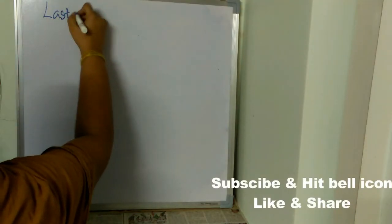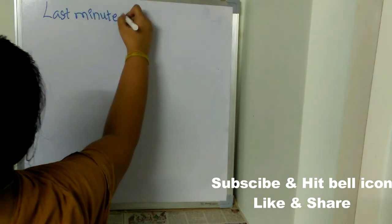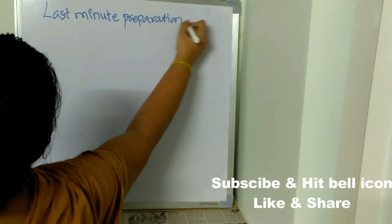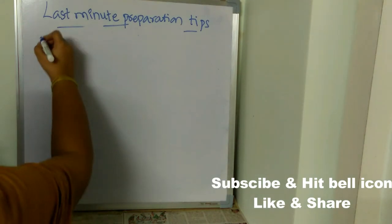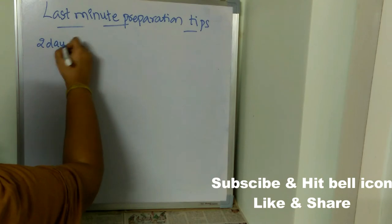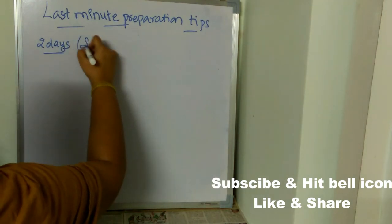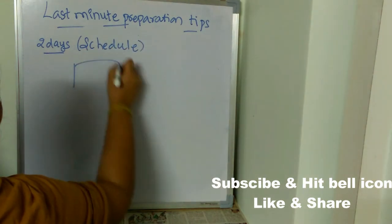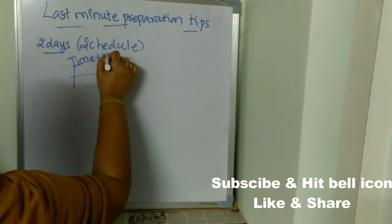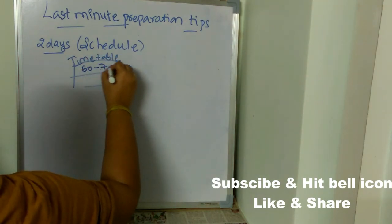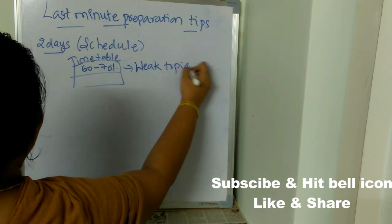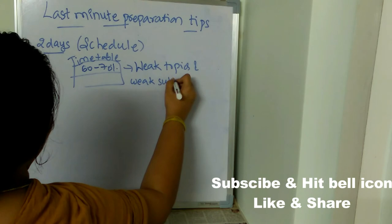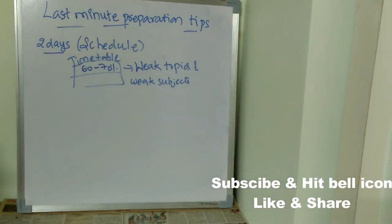Let's see what are last minute preparation tips for ESET. First thing is just analyze how many days are left for exam. For example, if you're left with only two days for exam, completely you need to schedule those two days. Prepare a timetable and make sure 60 to 70 percent of the timetable should consist of your weak subjects and weak topics. In subjects which you are not confident in, the topics which you don't know properly, concentrate on those topics. This is first preparation tip.